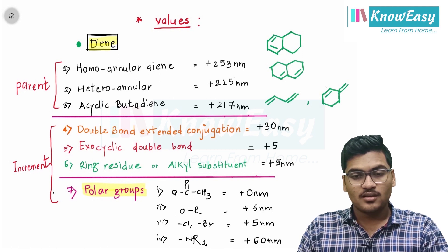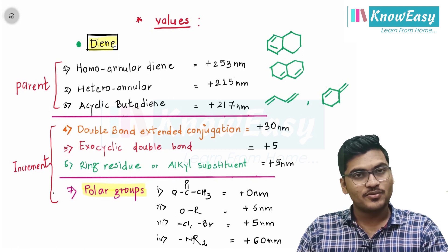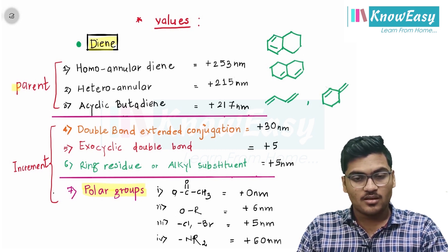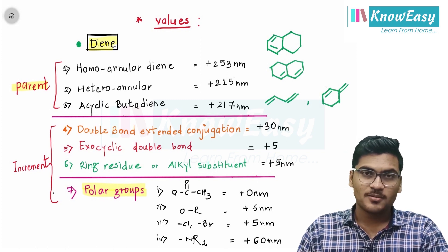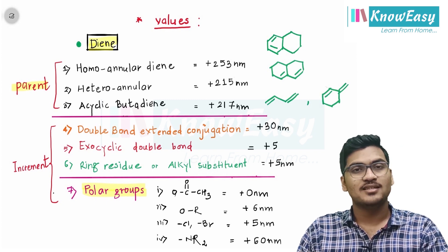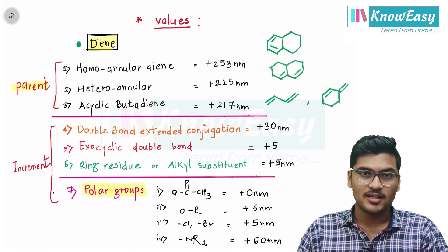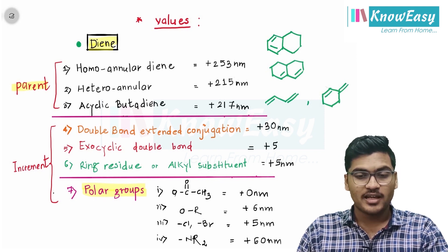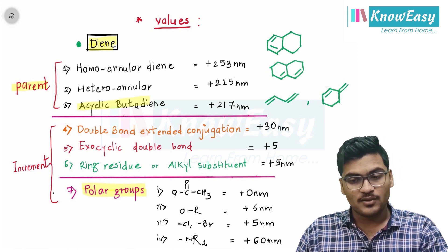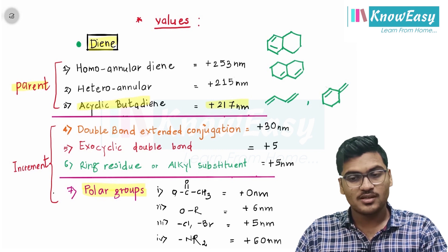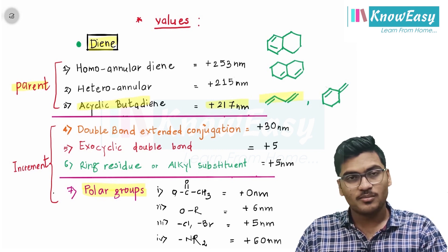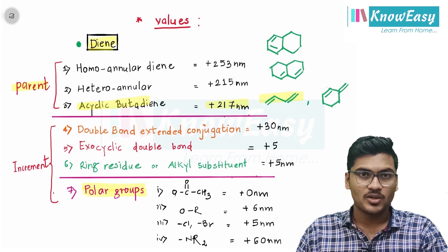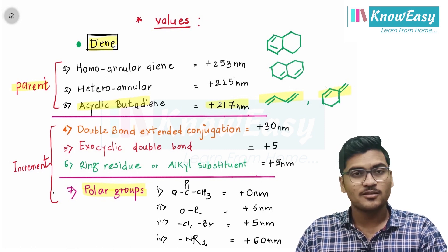So these are the values for dienes. We know that dienes are of two types: the first one is cyclic and the second one is acyclic. Acyclic butadiene has a base value of plus 217 nanometers, and it mostly exists in the transoid conformation.